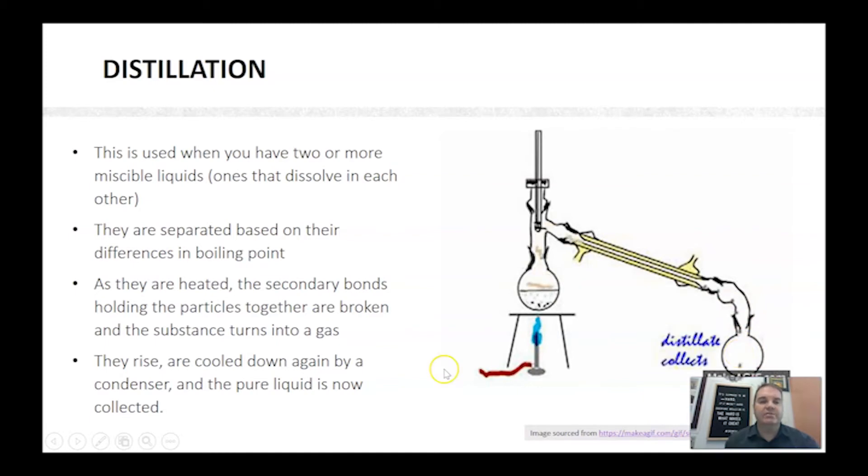Distillation is really good when you've got substances that have a reasonable amount of difference in boiling point. You want to have at least probably five to ten degrees as a minimum for separation, otherwise it becomes quite hard to actually make sure you get your pure sample at the end.